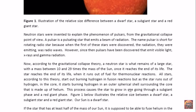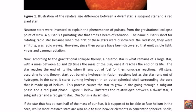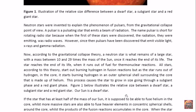According to the gravitational collapse theory, a neutron star is what remains of a large star with a mass between 10 and 29 times the mass of the Sun once it reaches the end of its life. The star reaches the end of its life when it runs out of fuel for thermonuclear reactions. At least that is the accepted theory. I believe it has more to do with its electric potential energy, but this is the accepted theory.